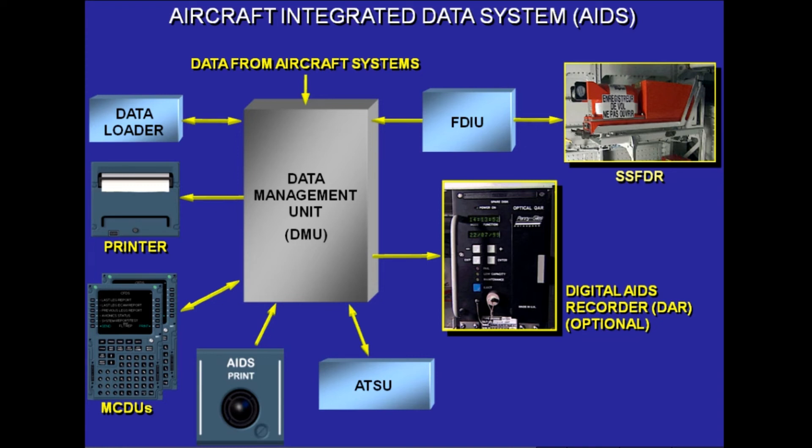The printer is used to print reports generated by the DMU. The printer can be automatically controlled by the DMU, manually controlled from the MCDU, or from the AIDS print push button located on the center pedestal.